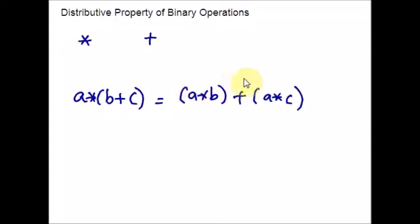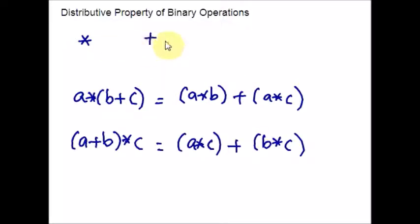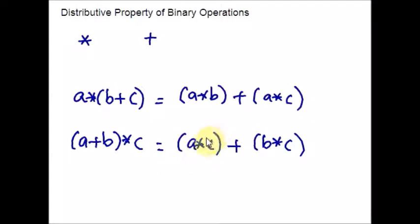Same way, I will explain what is right distributive. For the same binary operations asterisk and plus, it is said to be right distributive if for all A, B, C belonging to S, we have that (A plus B) asterisk C equals (A asterisk C) plus (B asterisk C). The asterisk symbol is said to be distributive if asterisk is both left and right distributive.